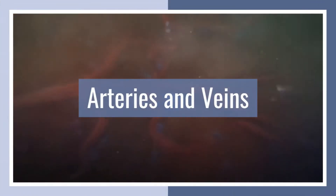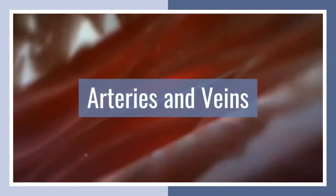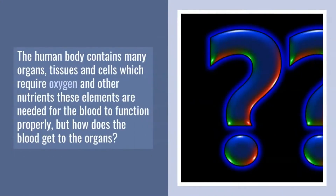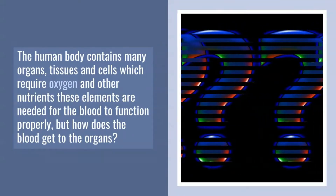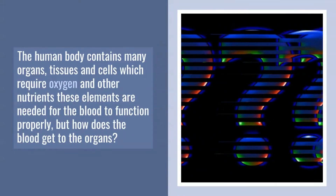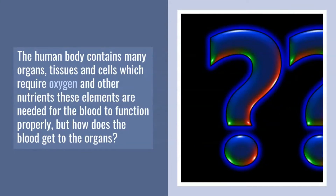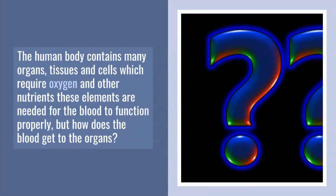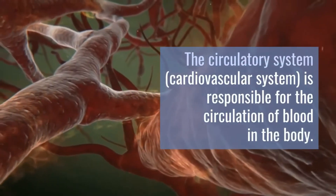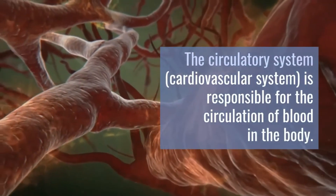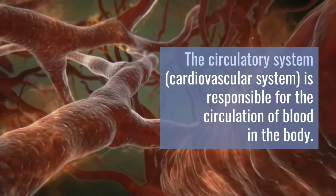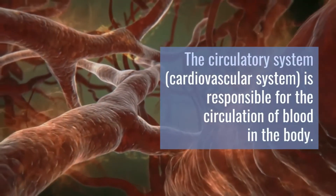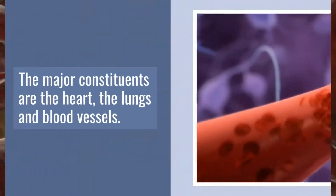Arteries and Veins. The human body contains many organs, tissues, and cells which require oxygen and other nutrients. These elements are needed for the blood to function properly, but how does the blood get to the organs? The circulatory system, also known as the cardiovascular system, is responsible for the circulation of blood in the body.